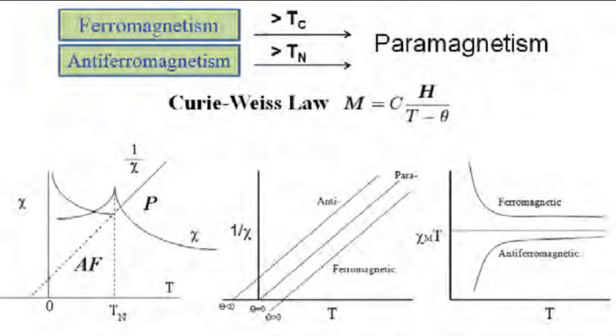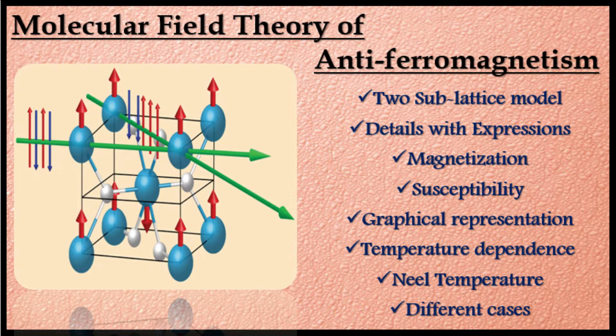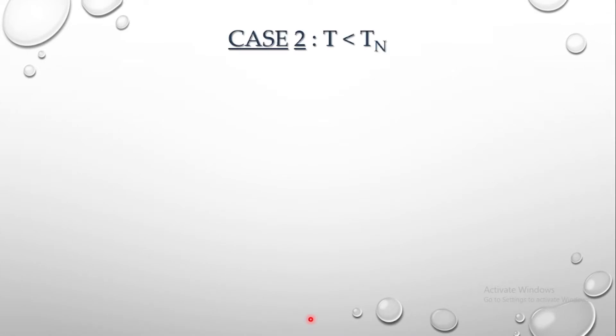Today we are going to continue with Case 2, where the temperature is less than Neel temperature. This is the main region of focus because below Tn we observe antiferromagnetic nature. If you have not gone through the previous class, please do so before continuing. Now let us concentrate on Case 2 where temperature is less than Neel temperature, remembering that we have assumed only AB interaction and not AA or BB interaction.